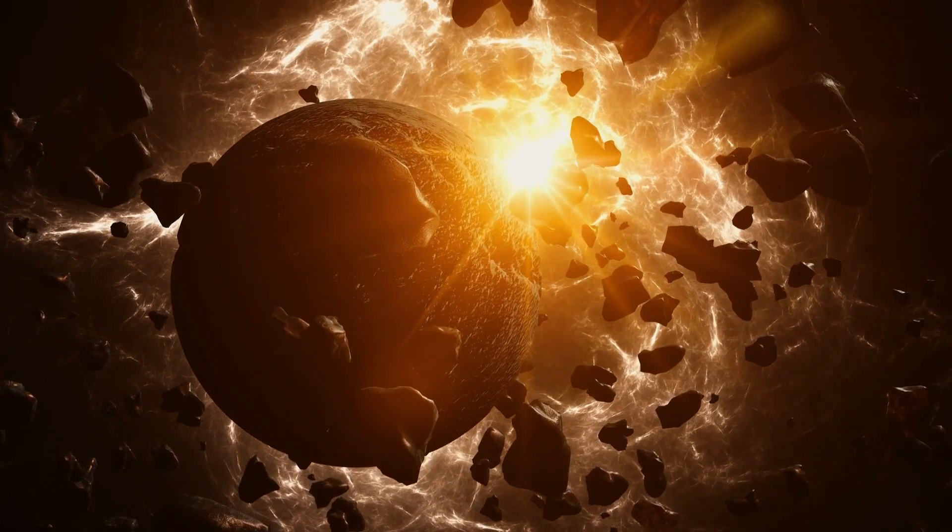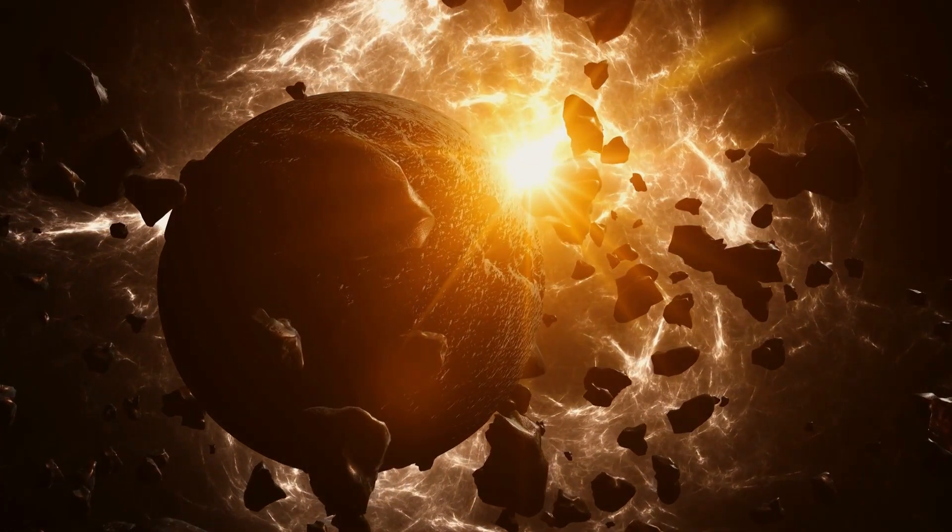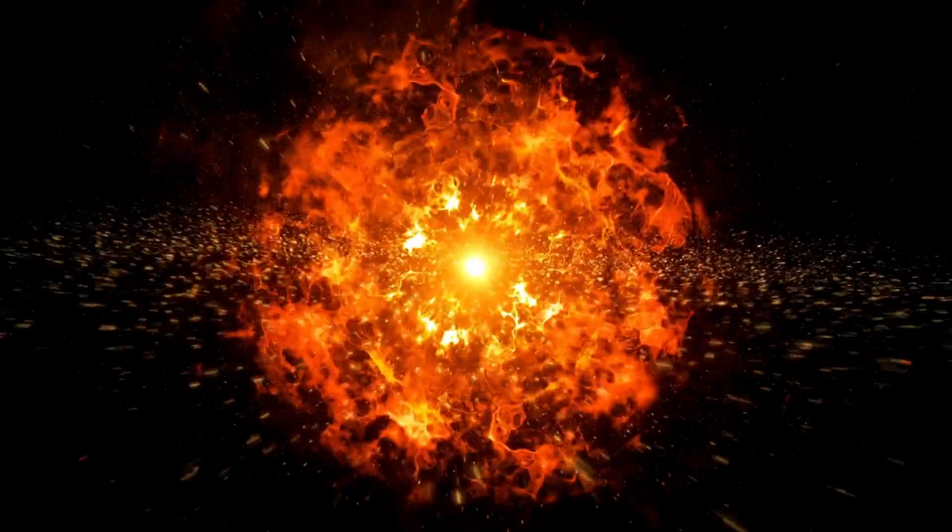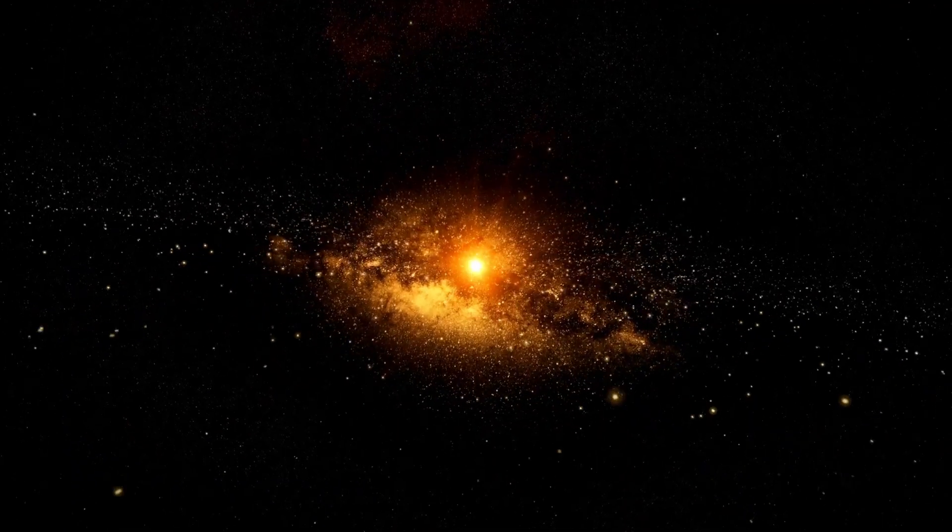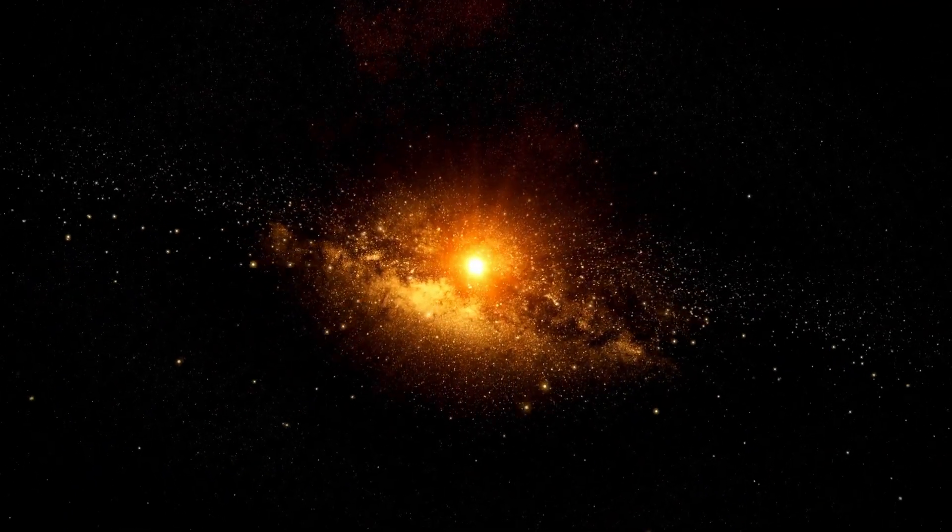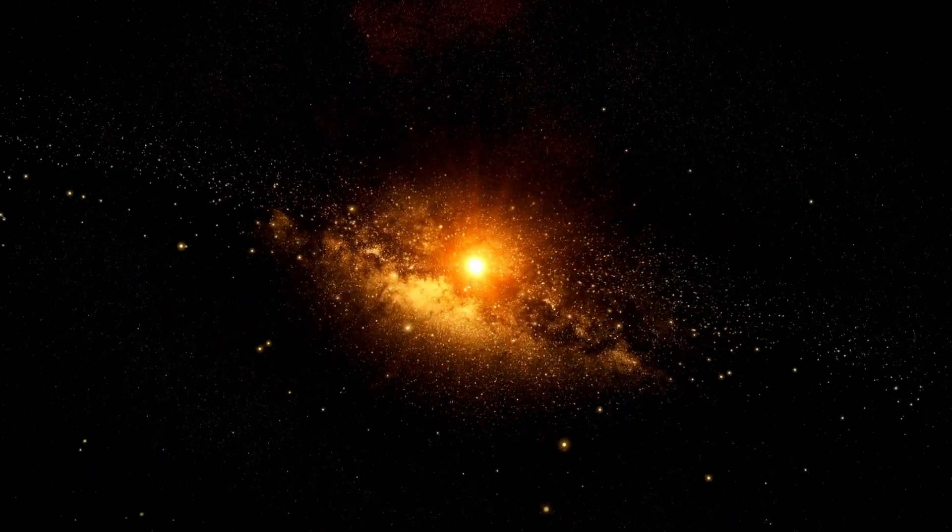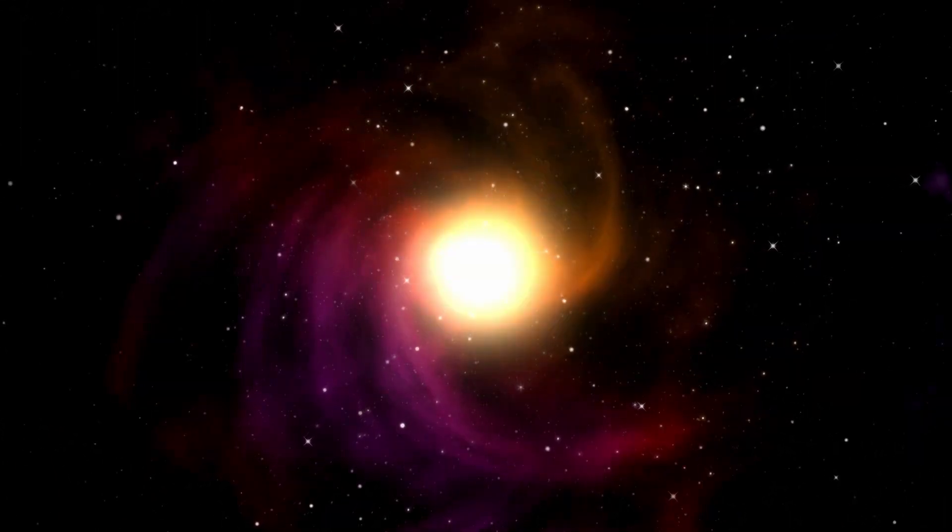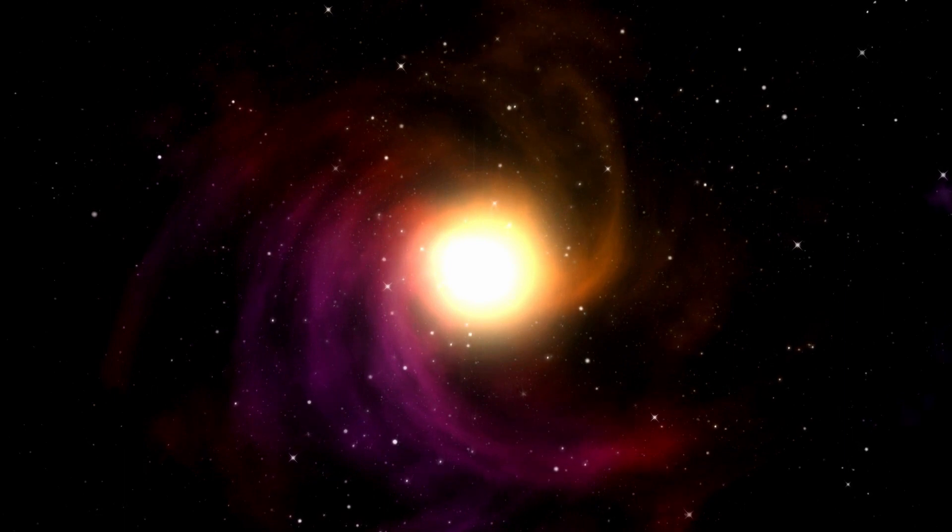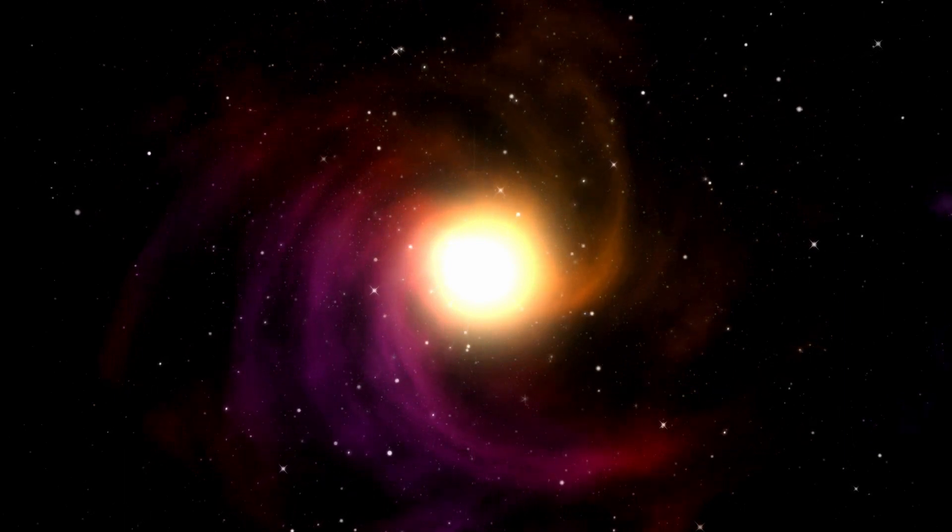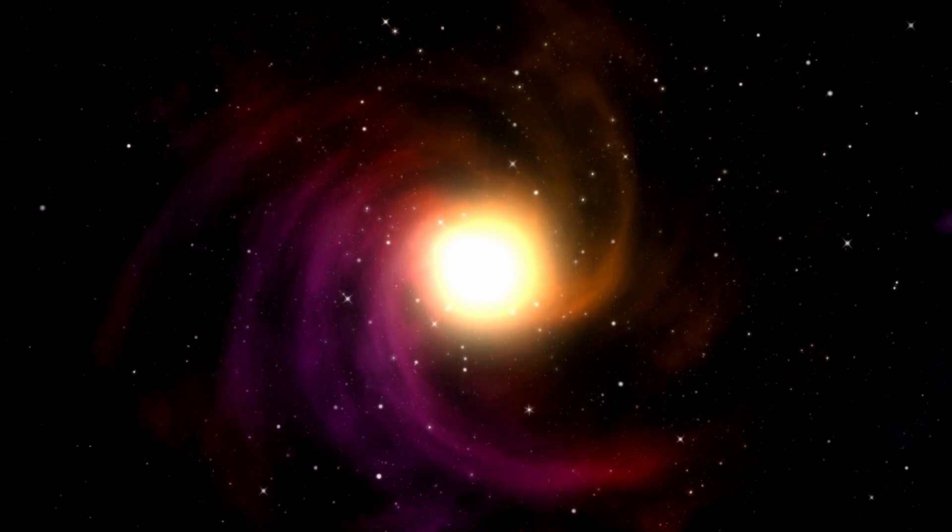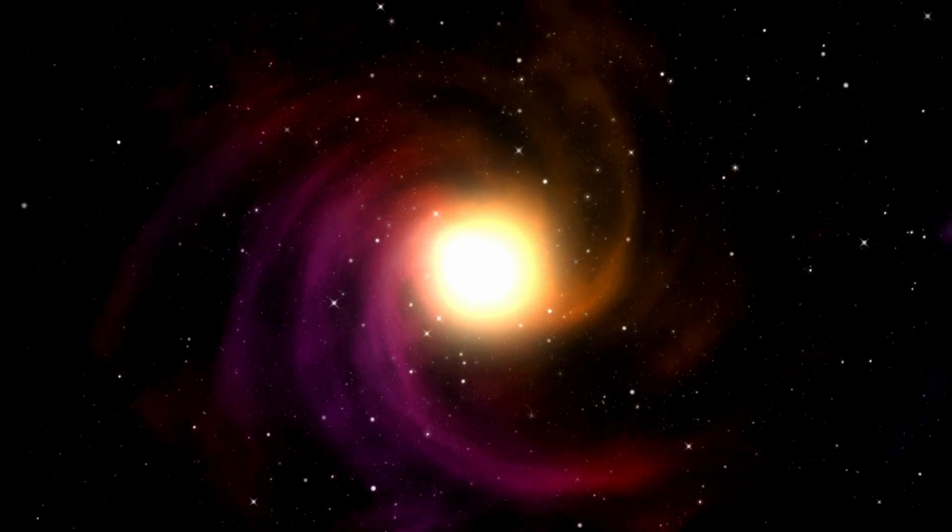The core collapses under its own weight in a fraction of a second, leading to a shock wave that rebounds outward. This shock wave, known as a supernova explosion, expels the outer layers of the star into space at incredible speeds. During a supernova, a star can briefly outshine an entire galaxy, releasing an astonishing amount of energy. The explosion disperses heavy elements such as gold, silver, and uranium into space, enriching interstellar environments and potentially seeding new star-forming regions.